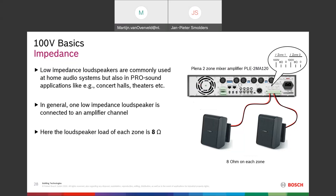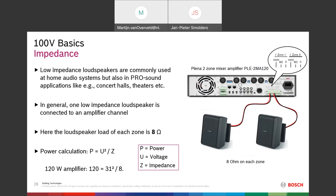Each loudspeaker load here is 8 ohm. Power is calculated by voltage squared divided by impedance — Ohm's Law. For a 120W amplifier designed for an 8-ohm output, the voltage at the output will be 31 volts, as shown in the equation.